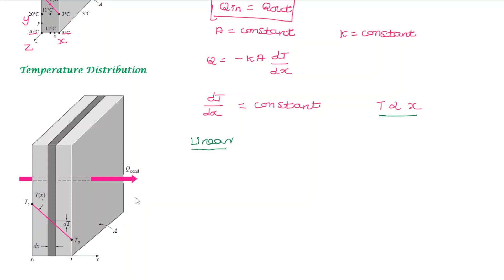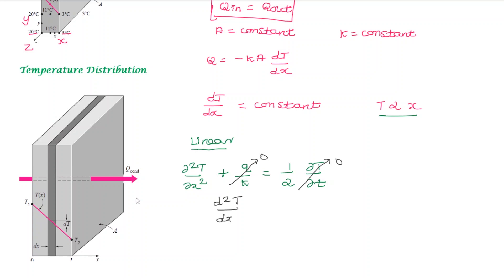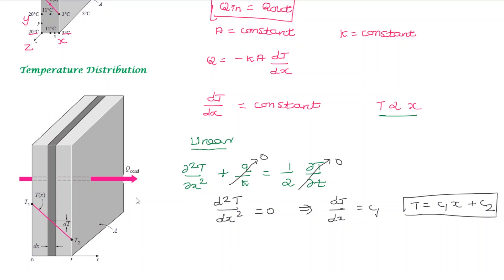The one-dimensional heat conduction equation is: d²T/dx² plus internal heat generation divided by thermal conductivity equals (1/α)·dT/dt. For steady state, the right-hand side is zero. With no heat generation, d²T/dx² equals zero. Integrating once gives dT/dx equals C1, and integrating again gives T equals C1·x plus C2. This is a linear equation, like y equals m·x plus c — a straight line. This confirms the temperature distribution is linear in steady state conduction without heat generation.